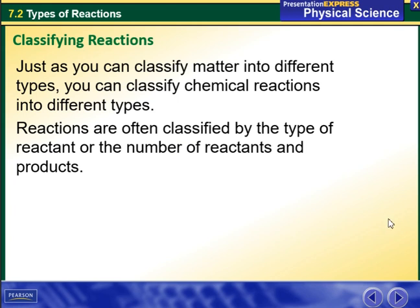Just as you can classify matter into different types, you can classify chemical reactions into different types. Reactions are often classified by the type of reactant or the number of reactants and products.